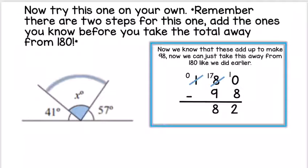You should find this really straightforward. If you've got one missing angle, you just take away that angle you know from 180. And if you've been given two angles, you add them together before you take away the total from 180. Good luck!